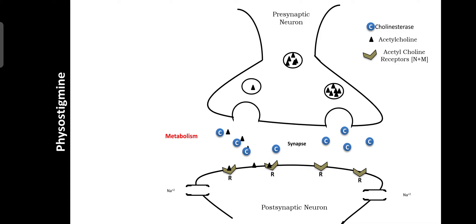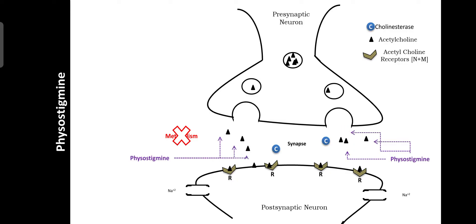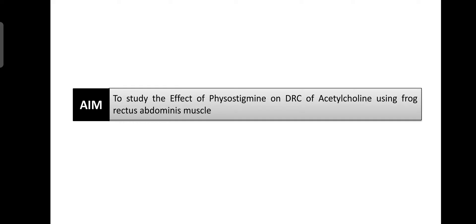With administration of physostigmine, physostigmine inhibits the metabolism of released acetylcholine at the synaptic junction, so the amount or concentration of acetylcholine around the receptors is increased. Finally, the effect of acetylcholine also increases due to the increasing concentration of acetylcholine at the synapse. The aim of this practical is to study the effect of physostigmine on the DRC of acetylcholine using frog rectus abdominus muscle preparations.